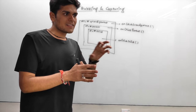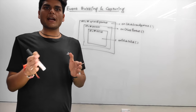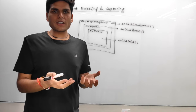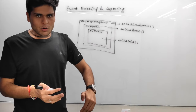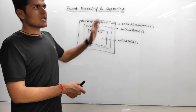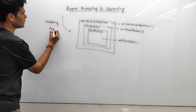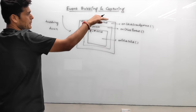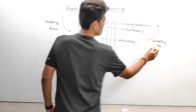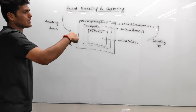Event capturing is also known as event trickling — it's not a separate concept, just another name. Some people prefer it because it's easier to remember: trickle down (grandparent → parent → child) and bubble up (child → parent → grandparent). The full cycle involves both.